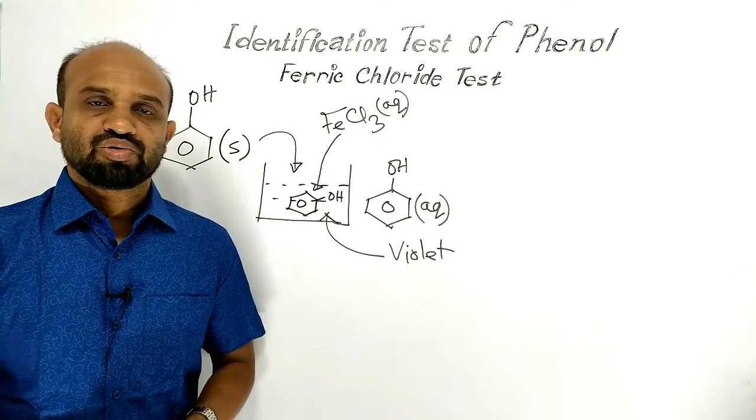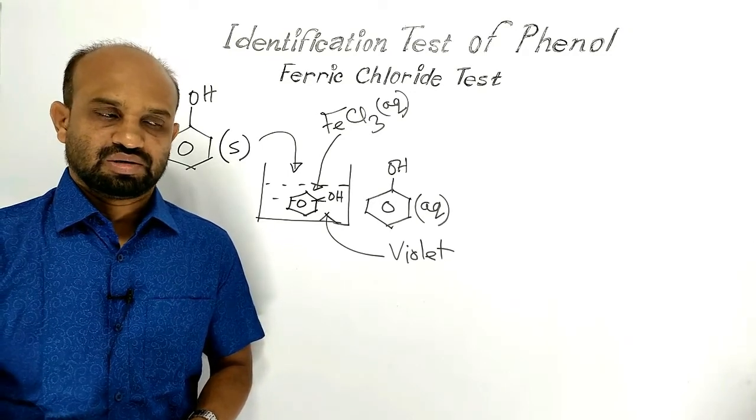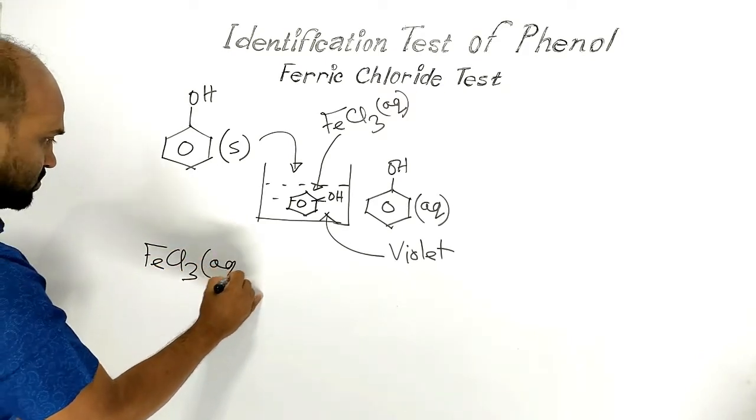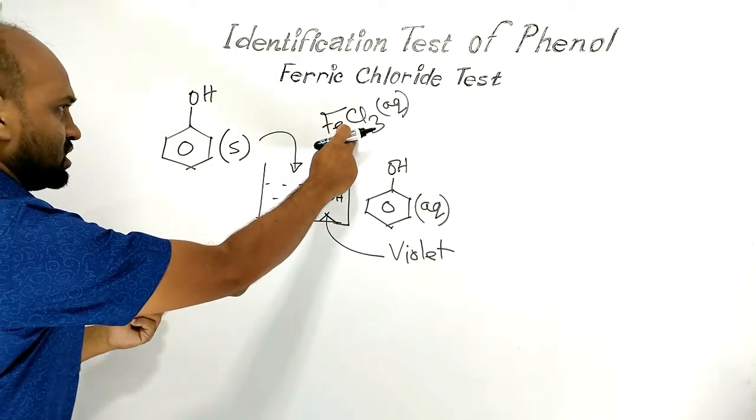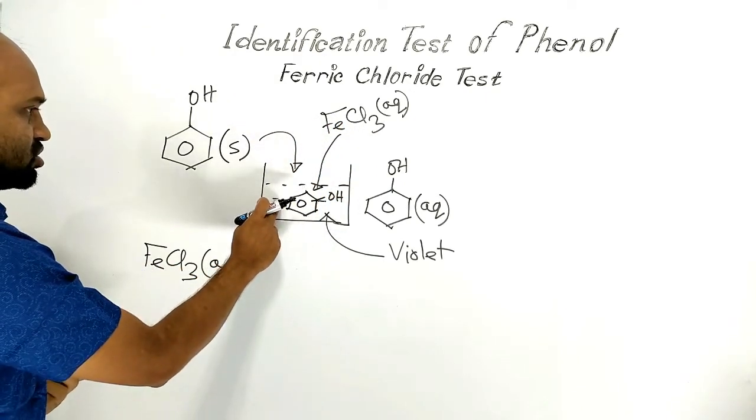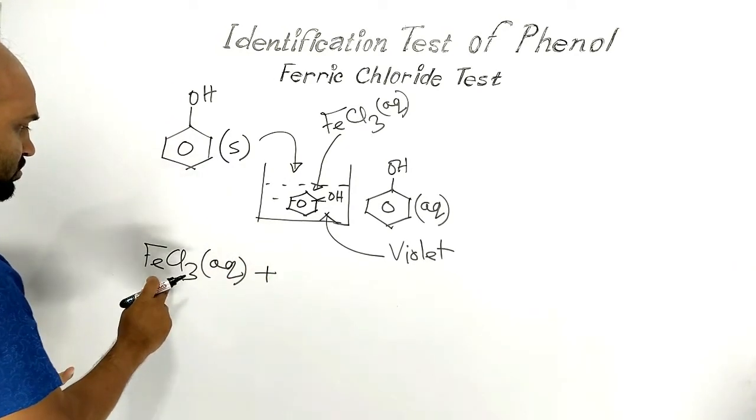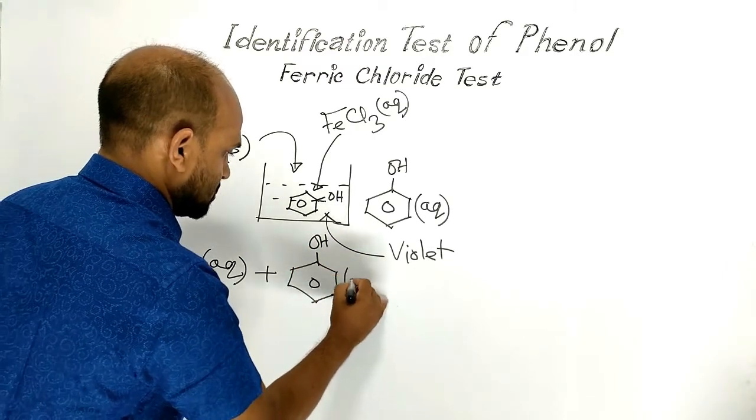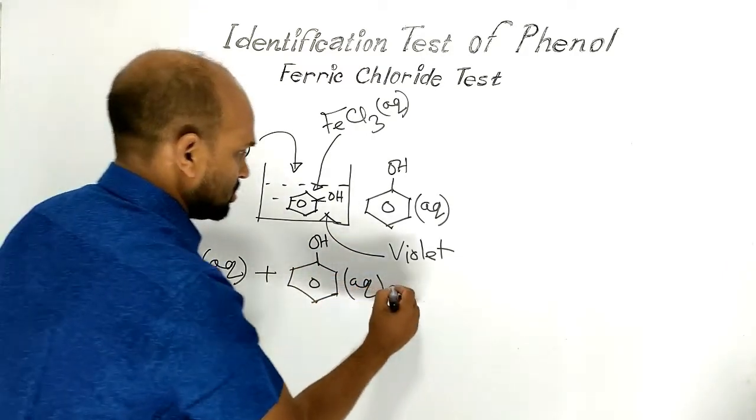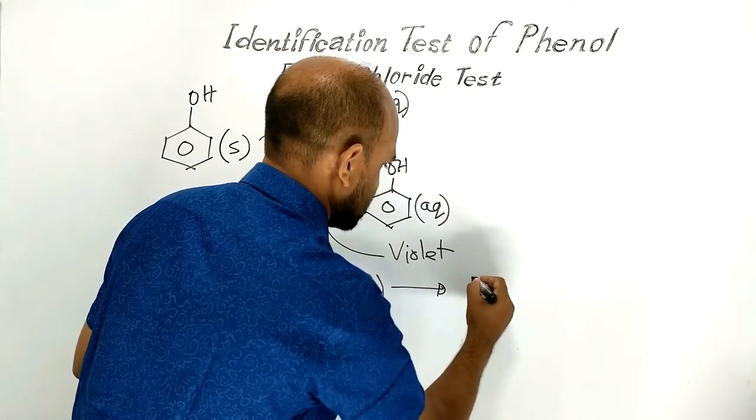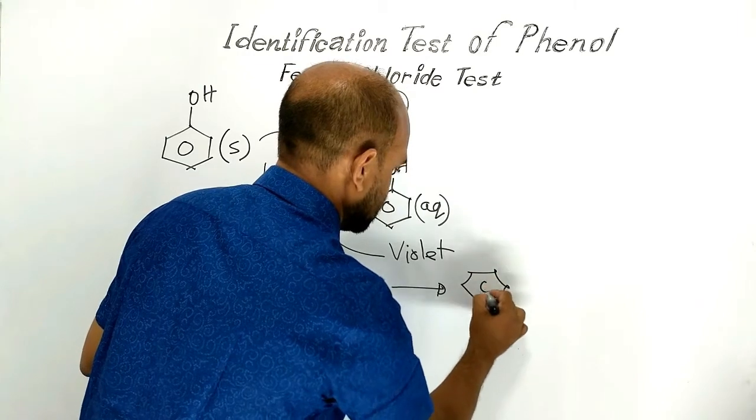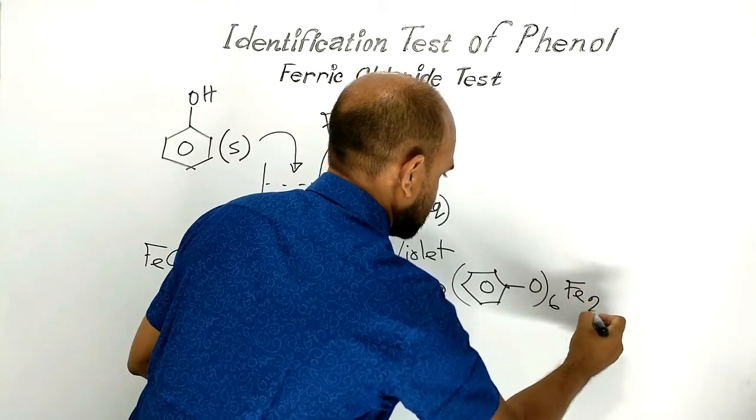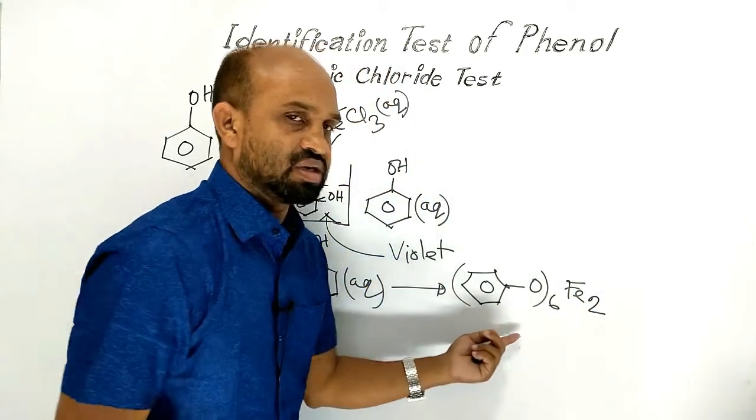Now let's see which compound is responsible for violet color. When ferric chloride solution is added to the colorless solution of phenol, ferric chloride reacts with phenol and as a result, a complex compound diiferric hexaphenate is formed.